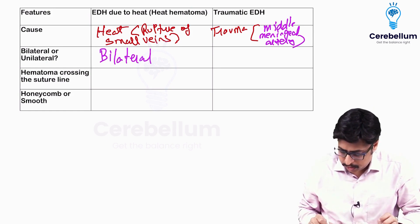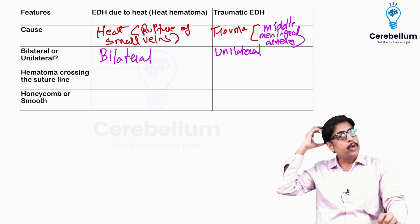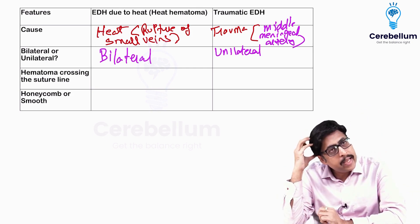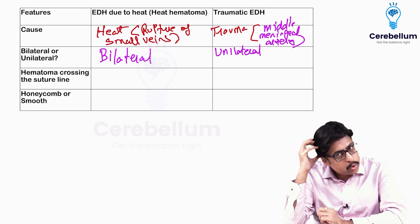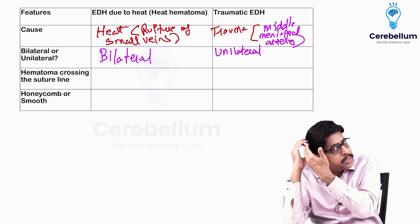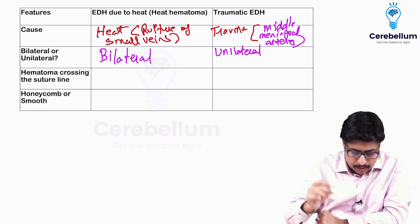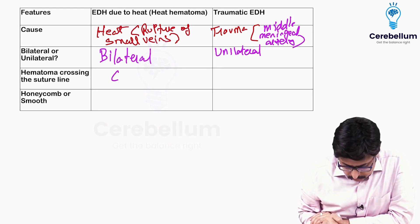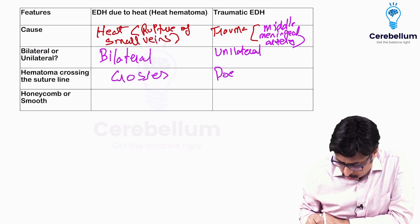Traumatic EDH is unilateral — it will occur only at the site of impact. Also, the dura is firmly adherent to skull sutures. So in traumatic EDH, the extradural hematoma does not cross the suture line, because the dura is adherent to it. EDH due to heat crosses the suture line, whereas traumatic EDH does not cross.